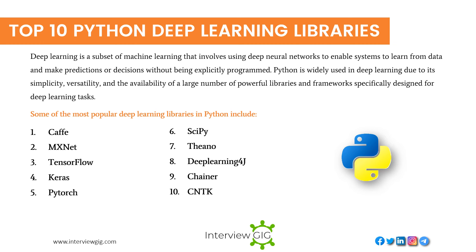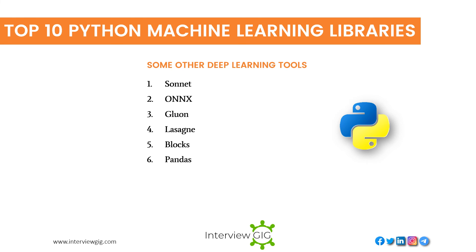Top 10 Python Deep Learning Libraries. Deep Learning is a subset of machine learning that involves using deep neural networks to enable systems to learn from data and make predictions or decisions without being explicitly programmed. Python is widely used in deep learning due to its simplicity, versatility, and the availability of powerful libraries. The most popular include Caffe, MXNet, TensorFlow, Keras, PyTorch, and Fiano. Other deep learning tools include DeepLearning4J, Chainer, CNTK, Sonnet, ONNX, Gluon, Lasagne, Blocks, and Pandas.